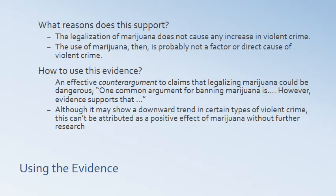How would you use this source? One thing you could use it for is as a counter-argument to claims that legalizing marijuana could be dangerous. For example, if one side says legalizing marijuana risks opening the door to higher crime rates, you could say: one common argument is that marijuana can lead to more crime; however, we have evidence that in Colorado, legalization did not lead to violent crime. An important caveat: even though the data shows a downward trend, we can't necessarily attribute that as a positive effect of marijuana without further research, since that trend was occurring before legalization and continued afterwards. We don't want to use the evidence to make claims we can't support.